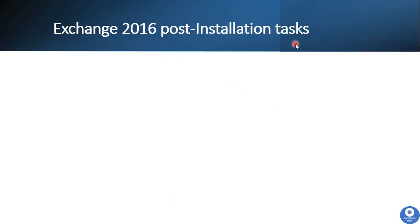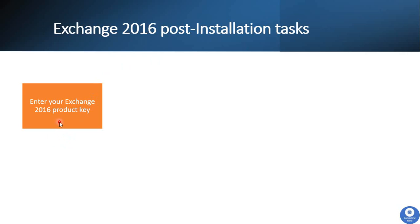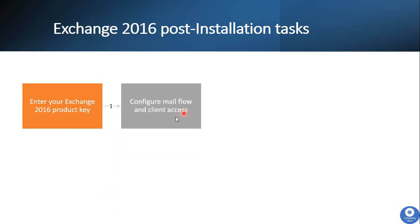Now these are some of the post-installation tasks that we need to follow. After installing Exchange, first we have to apply the product key. A product key tells Exchange Server 2016 whether we have purchased the Standard or Enterprise Edition license. Please check my separate video for more details on Standard vs. Enterprise Edition. Next, we have to configure Mail Flow and Client Access. In this step, you configure the Send Connector and Receive Connector for email flow, and for client connectivity like Outlook or ActiveSync devices, you configure the Virtual Directories and Certificates on Exchange Server 2016.